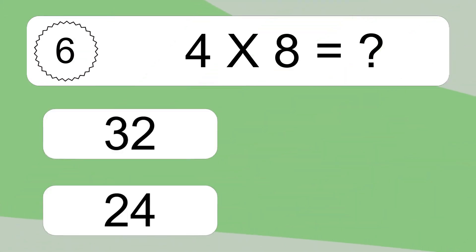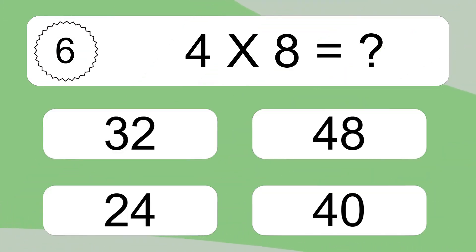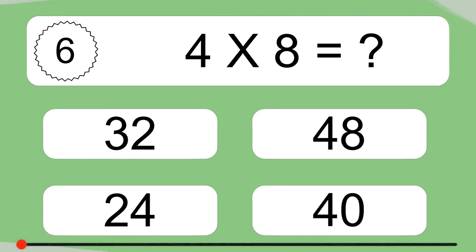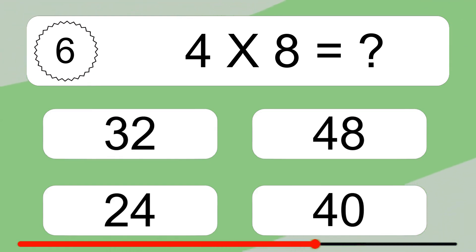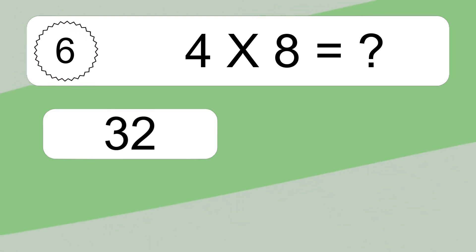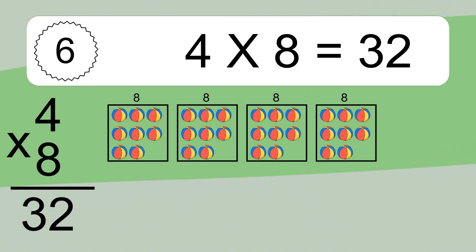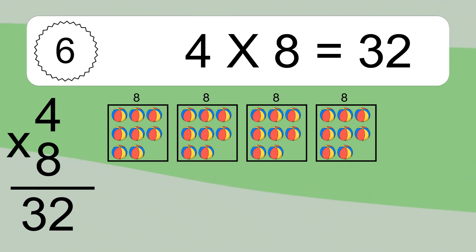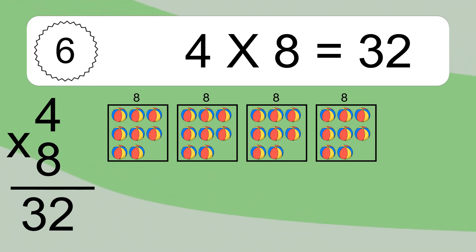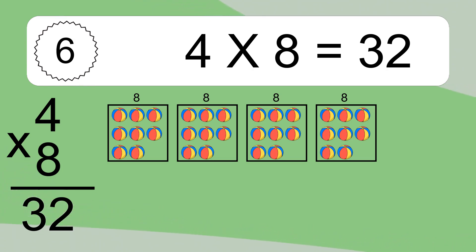4 times 8 equals what? 4 times 8 equals 32. We have 4 boxes, and each box has 8 colorful balls inside. If you count all the balls in all the boxes together, you will have 4 times 8 balls. This equals 32 balls.